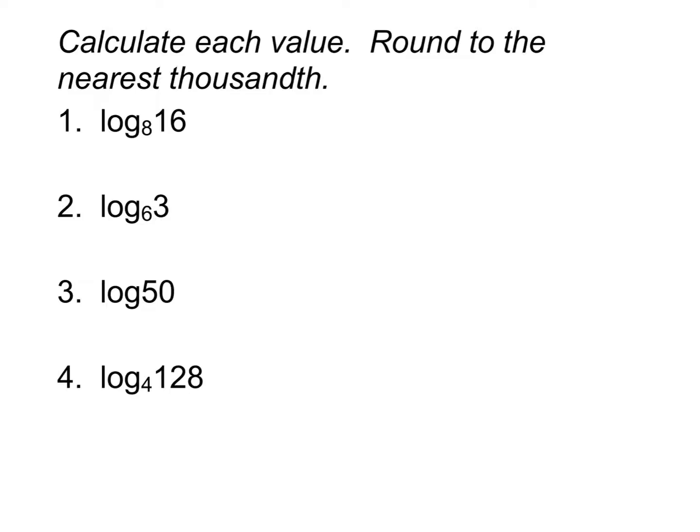So following up on the notes from yesterday, in order to do number 1, log base 8 of 16, it becomes a log divided by a log. That's using change of base formula. The base is always the number that goes on the bottom. So that means since the 8 is on the bottom here, the 16 must be the number that goes on the top. So it's log 16 divided by log 8 here. Go ahead and make sure that you can get the right number out of that as well. You should be getting an answer of 1.333. One little detail here, you notice I'm getting three decimals. That's just because we're told here to round to the nearest thousandth.